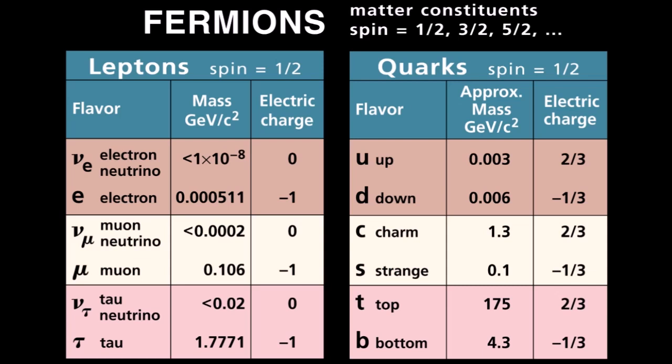The fermion series includes the quark types: up quark, down quark, charm quark, strange quark, and bottom quark.